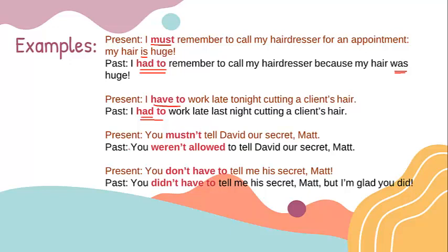The third example. Present: 'You mustn't tell David our secret, Matt.' Instead of using 'mustn't,' we use: 'You weren't allowed to tell David our secret, Matt.' — 'weren't allowed.'